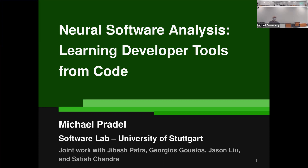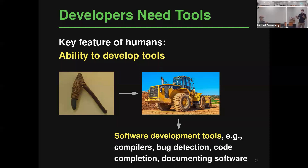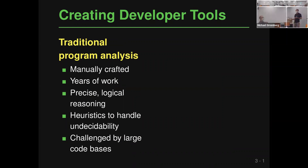Welcome to this talk on neural software analysis, which is another way of learning developer tools — basically learning them from code. As motivation, let's zoom out and think about why we humans are what we are today. One key ability we have is developing tools: from stone-age tools to impressive industrial machines. Nowadays everything is about software, so what matters are software development tools — compilers, bug detection tools, code completion tools, and many others that developers use to be productive.